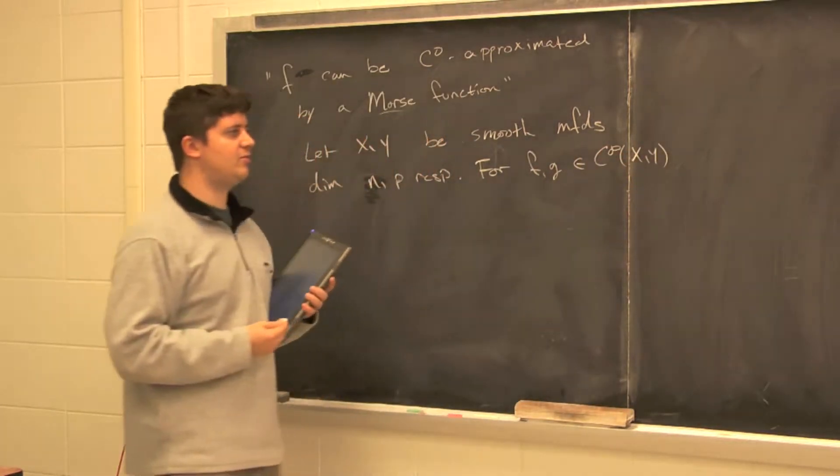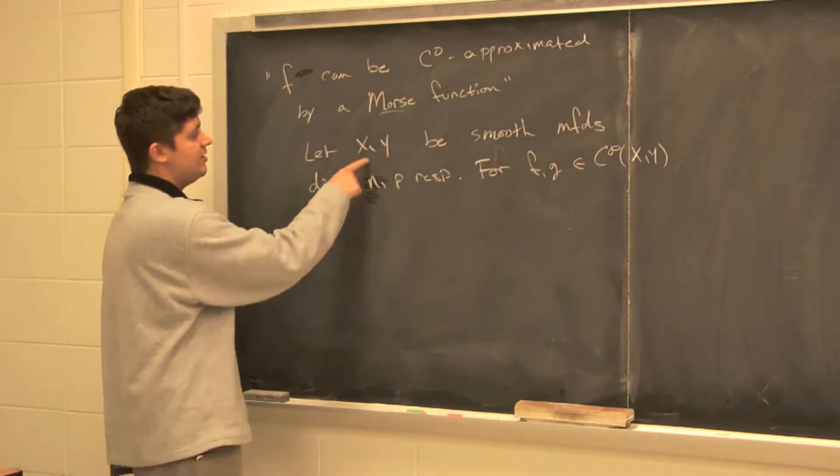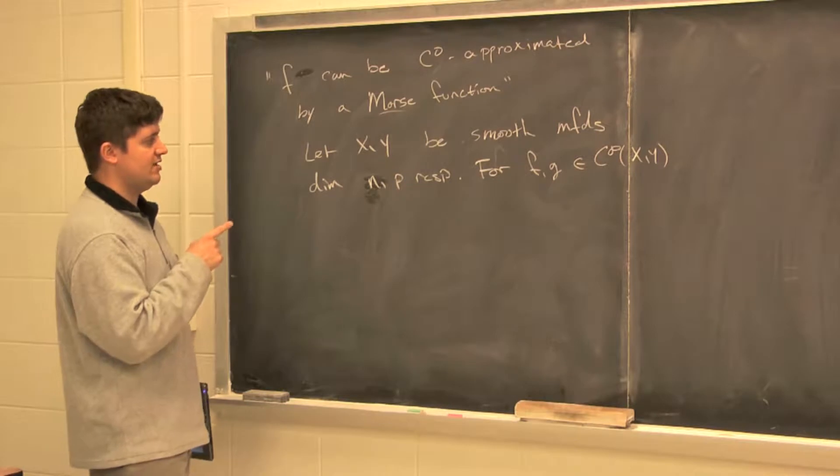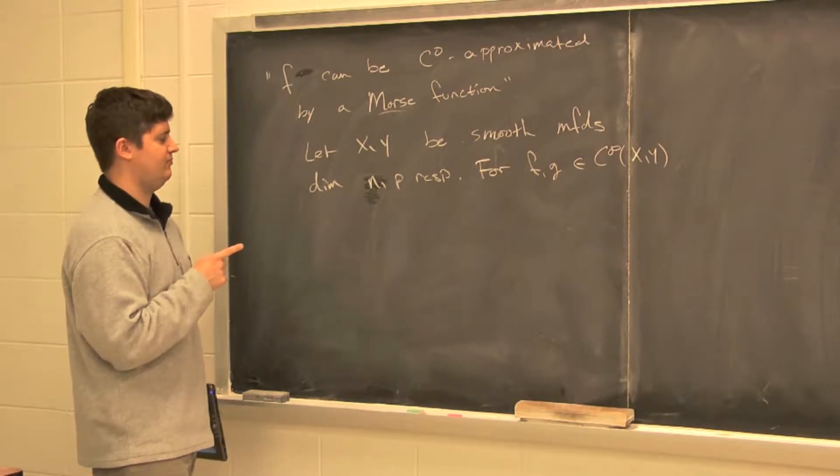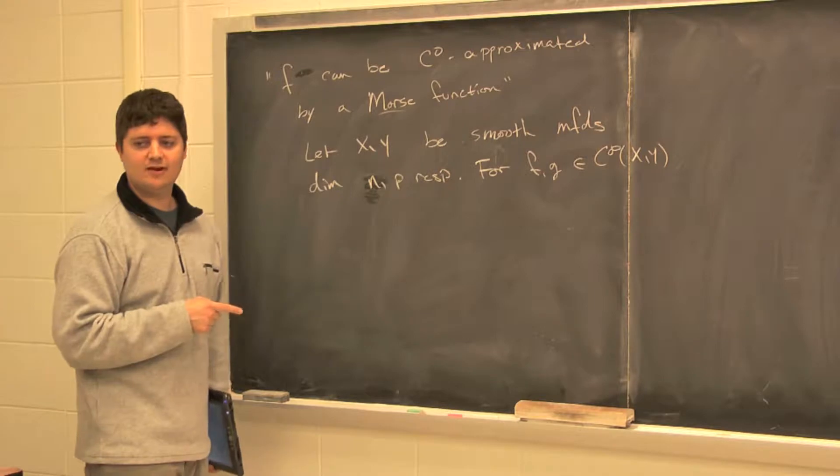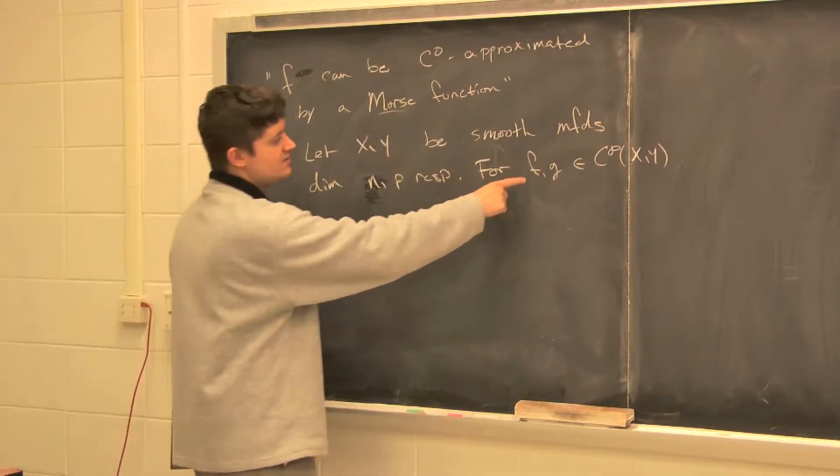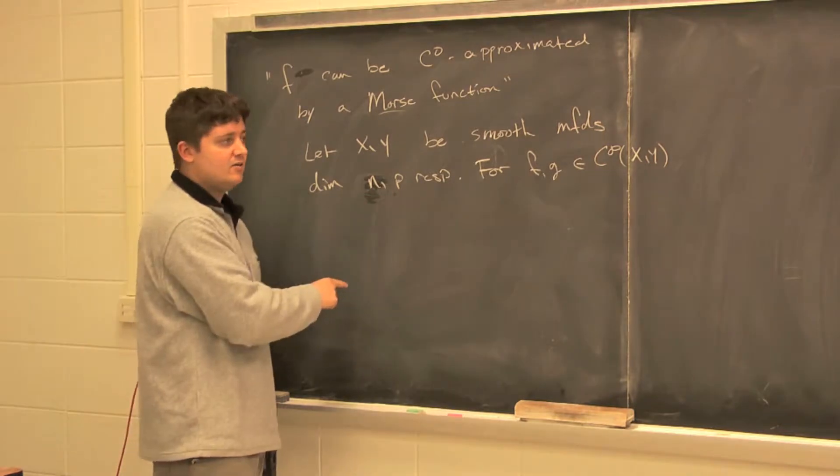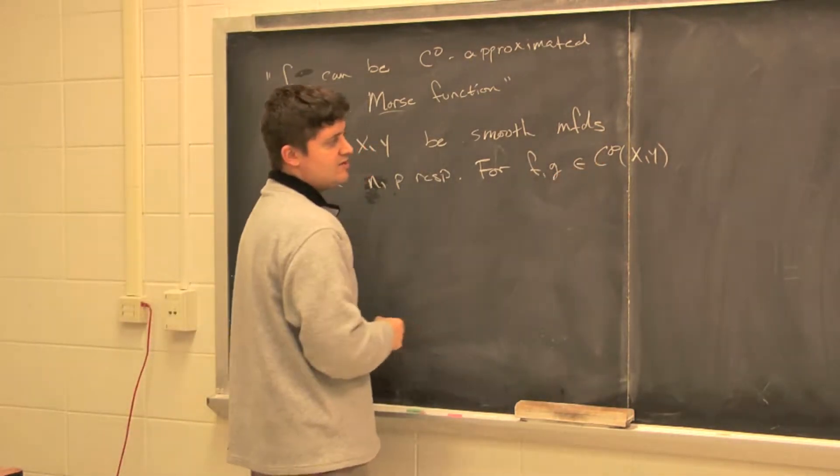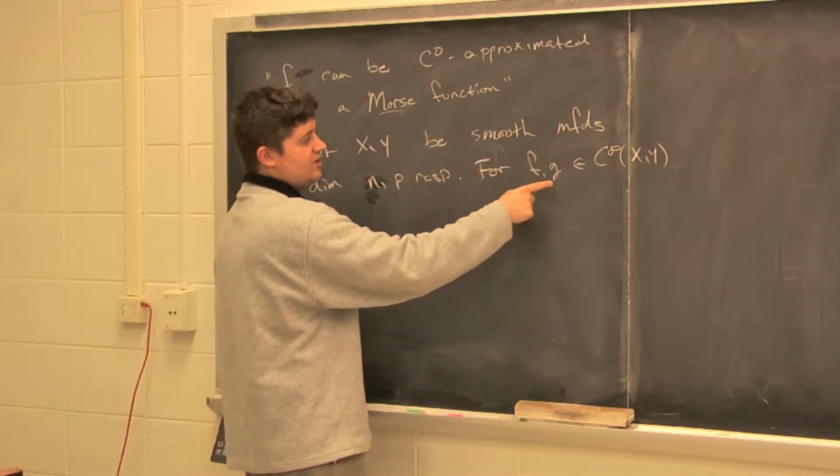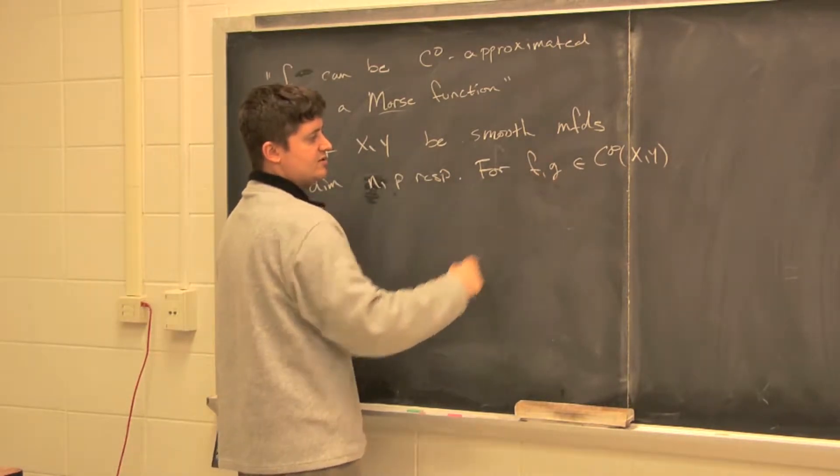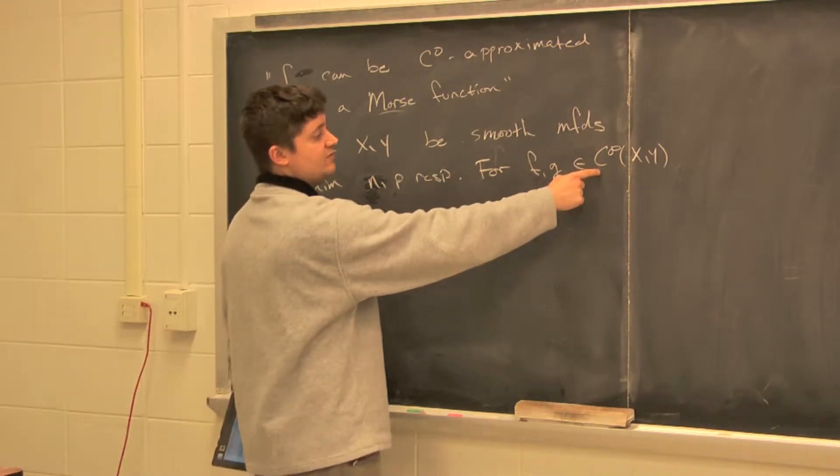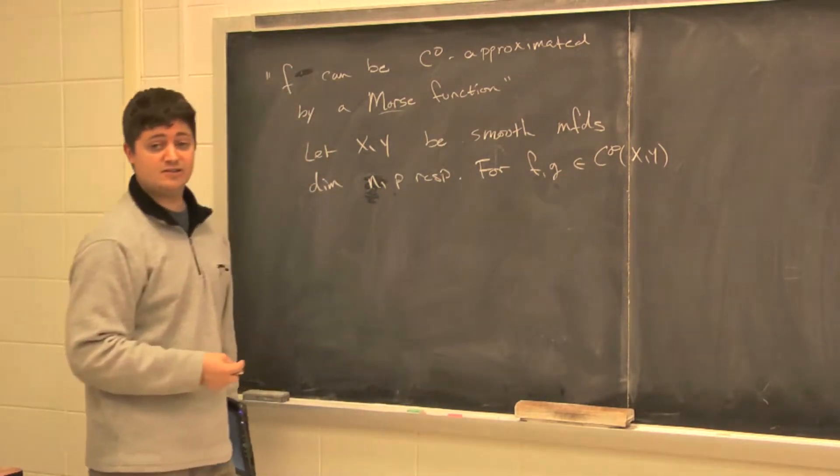And then, for f and g in C infinity of X,Y, that means that all their partial derivatives exist and are continuous. X and Y are smooth manifolds, so you've got an atlas of local coordinates on X and Y. Locally, you can think of these as maps from R^n to R^p.